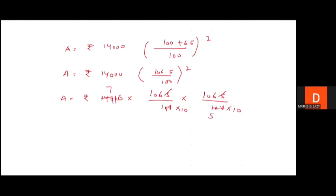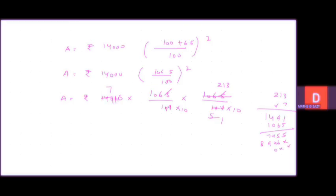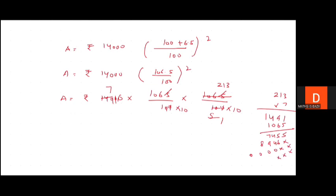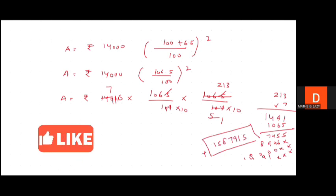So 213 into 7 would be coming out to be 1491, and it would be multiplied by 1065. That would be 7455, then 8946, then zeros. It would be 1491. Add to get the value: 15879.15 upon 10 × 10 means 100, so decimal change.